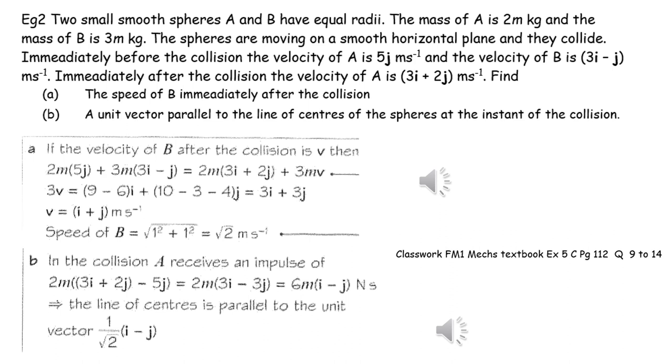The line of centers has to be exactly in the same direction as the impulses on either a or b, so we can work out the impulse on either a or the impulse on b by considering the change of momentum. Here we've worked out the change of momentum of a, so we can work out the impulse on a. The line of centers has to be parallel to this impulse vector, and therefore we can just work out a unit vector in the direction of the impulse vector.